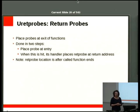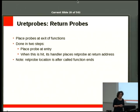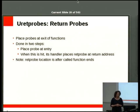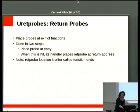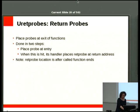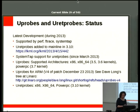The latest addition to the family was ureturn probes — a way of placing probes at the exit of functions in user space code. It's done in two steps: you place a probe at the entry of the function, and only when that entry is reached do you go and insert the probe at the return location in the call stack.